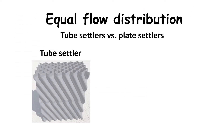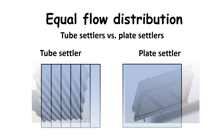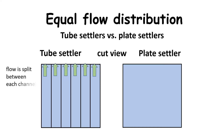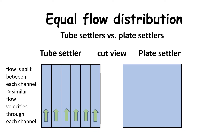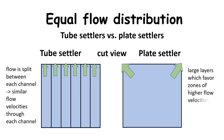Tube settlers have, in general, an advantage over plate settlers regarding equal flow distribution. Because tube settlers consist of several smaller channels, the water flow is split between each channel, resulting in similar flow velocities throughout each channel. However, plate settlers consist of large layers, which favour zones of higher flow velocities, short-circuiting, and zones of little or no upward flow velocity at all — dead zones.